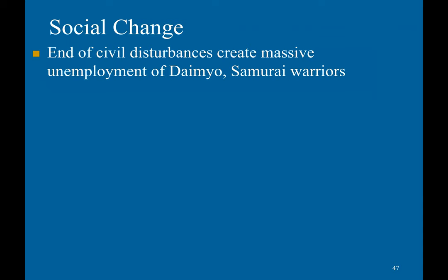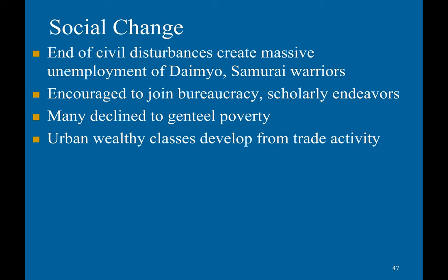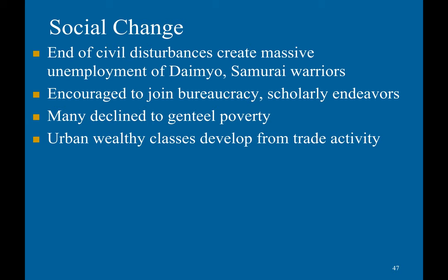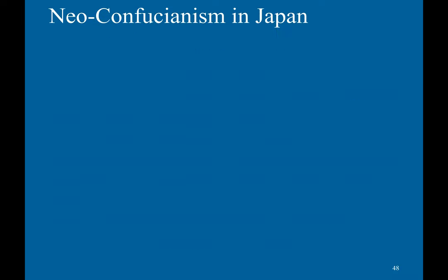The end of civil warfare created massive unemployment for the daimyo and samurai lords. They were encouraged to join the bureaucracy and engage in scholarly endeavors, with many declining into genteel poverty. The urban wealthy classes developed trade activity — rice dealers, pawnbrokers, and sake merchants — soon controlling more wealth than the traditional elites. This was a direct contradiction to the traditional Confucian order.